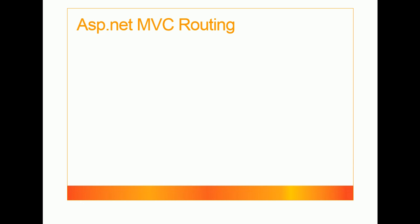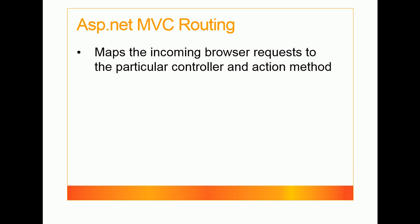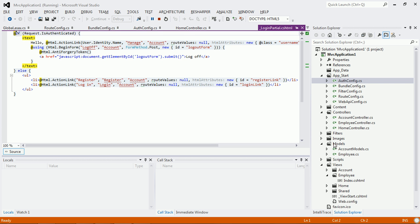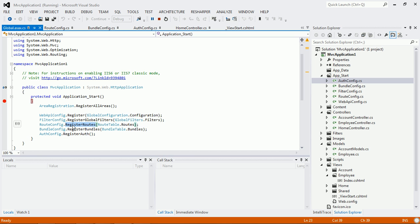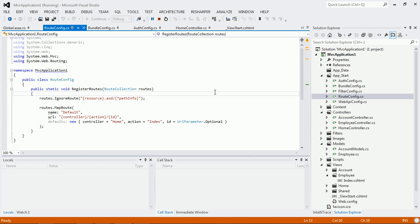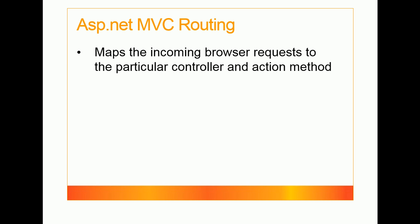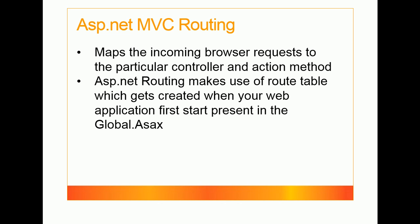Now let's move on to ASP.NET MVC routing. As we saw in global.asax, the routes get registered there. The RegisterRoutes method is present in the App_Start folder in the RouteConfig.cs file. This is where the ASP.NET MVC routing mechanism is handled. It maps incoming browser requests to a particular controller and action method. The routing table is generated when the web application first starts, in the global.asax page.